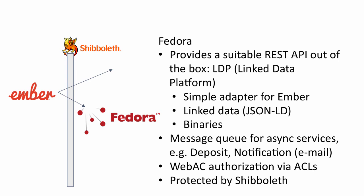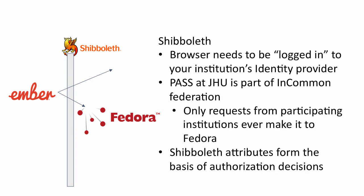Fedora provides an API, a message queue for asynchronous services like deposit, and we also have other services that send out emails when necessary — for example, if a submission needs attention from a preparer. Fedora also provides authorization via ACLs, which I'll talk about shortly. All communication between Ember and Fedora is protected by Shibboleth. PASS has a service provider that is part of the InCommon Federation, set up as a proxy on top of Fedora. Any request that comes from the outside internet will pass through the service provider before being passed along to Fedora.